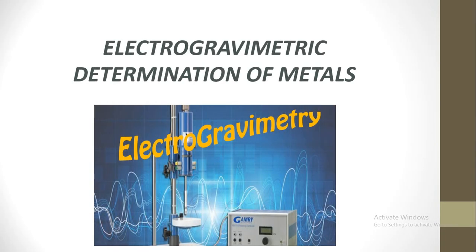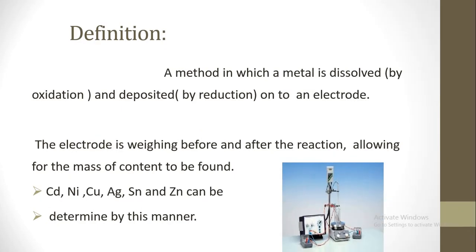Electrogravimetric Determination of Metals. Definition: A method in which a metal is dissolved by oxidation and deposited by reduction onto an electrode. The electrode is weighed before and after the reaction, allowing for the mass of content to be found.